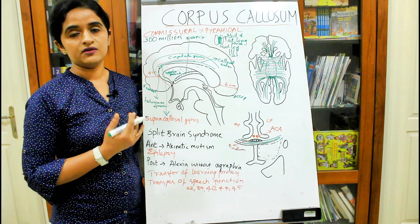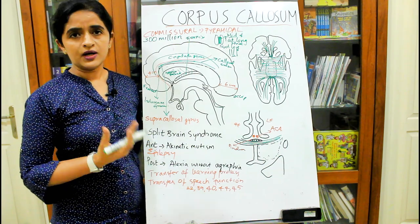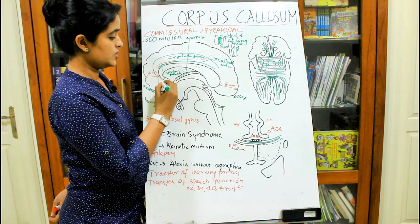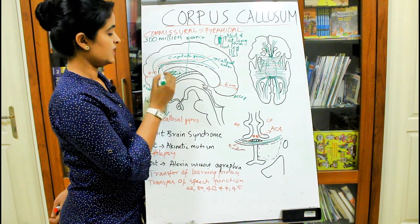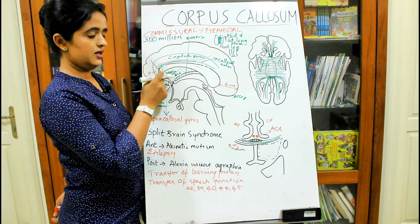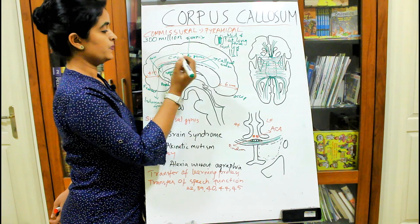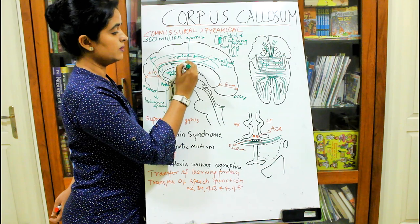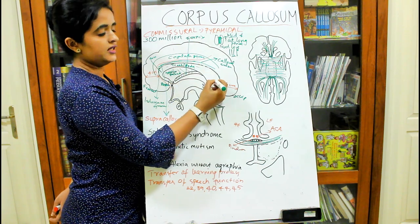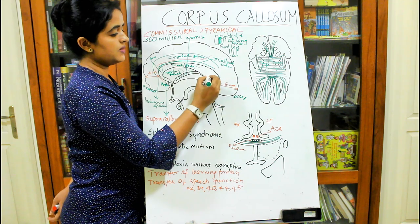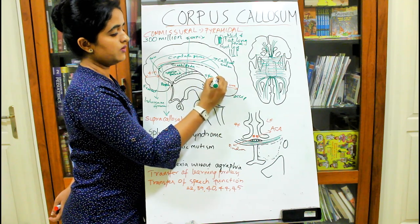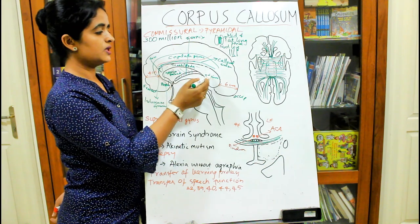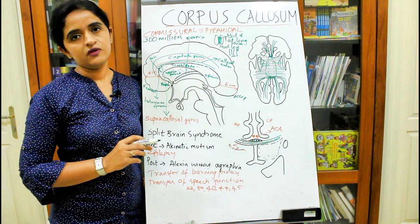Now let's look at the parts of corpus callosum. The anteriormost thin portion is known as the rostrum. The bent portion just above it is known as the genu. The main bulk is the trunk or body of corpus callosum. And the posterior, broader, thickest band is known as the splenium of corpus callosum. So you have the rostrum, the genu, the trunk or body, and the splenium.